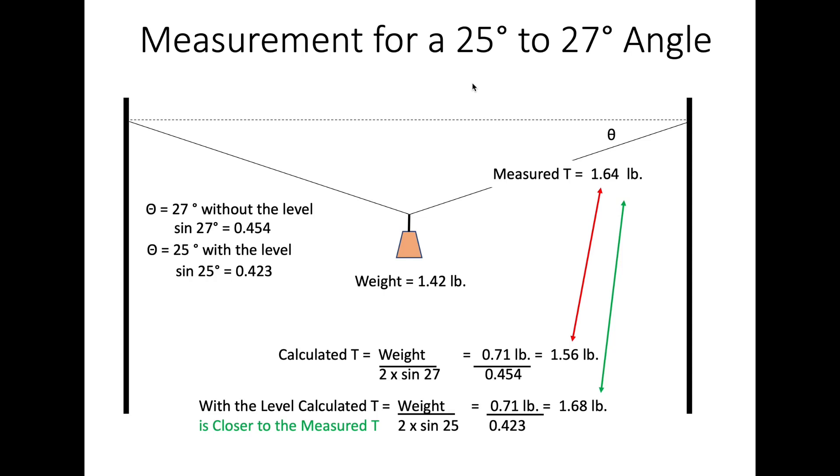Here we made a little discovery that the sag of the digital scale on the paracord here, our rope, was causing angles to be slightly off. So, what I did was measured the angle like I had been without the level. Without the level, I measured 27 degrees. And with the level, getting a straight line across here, 25 degrees.